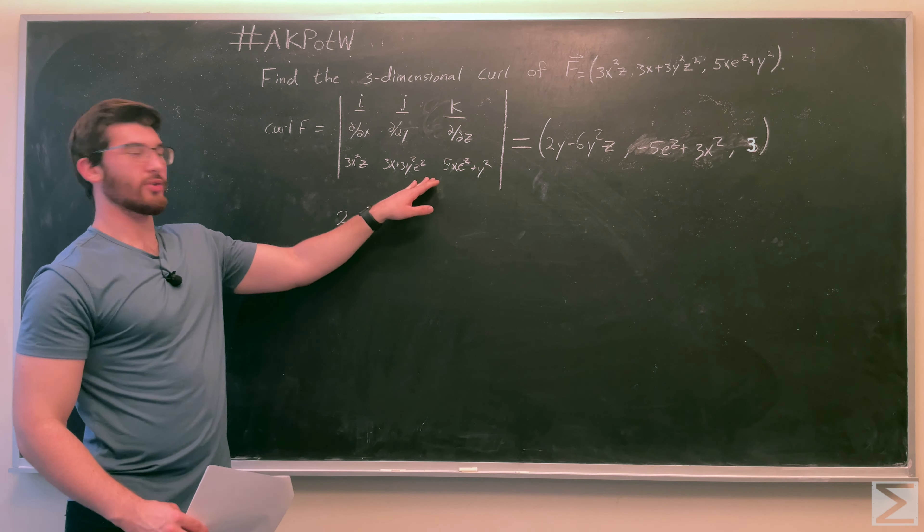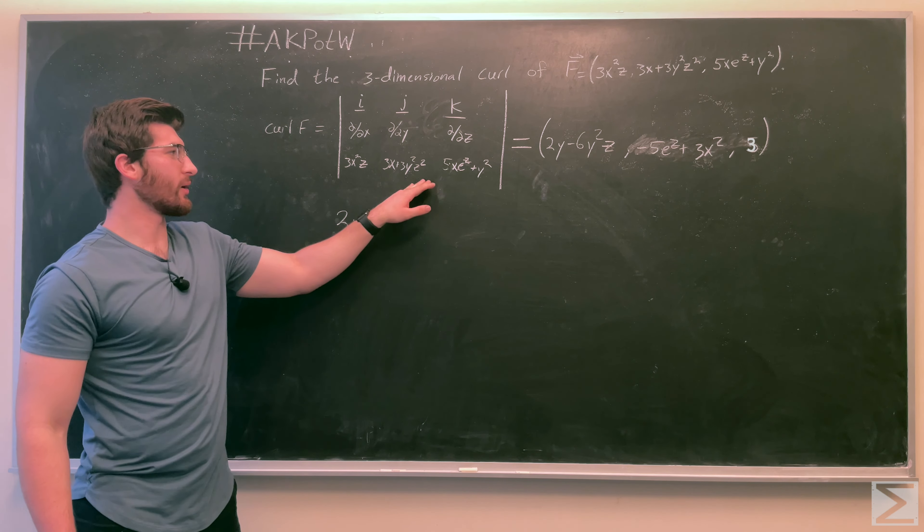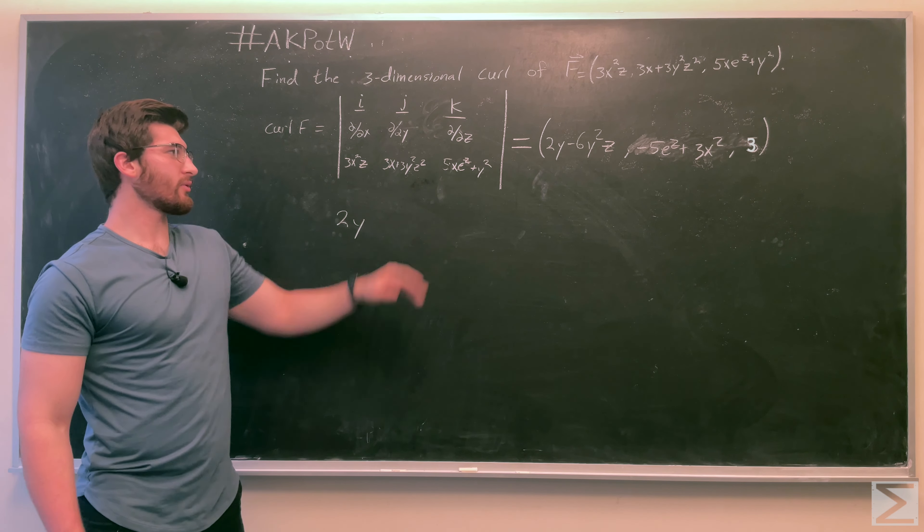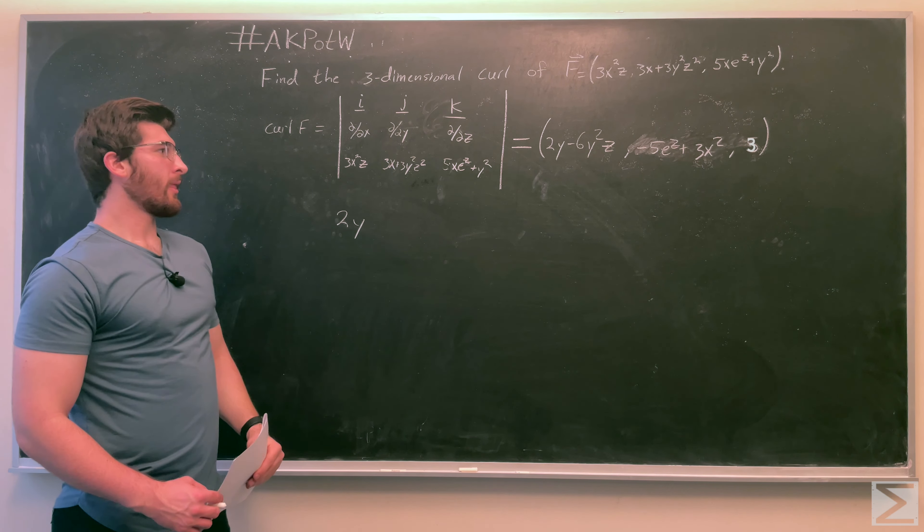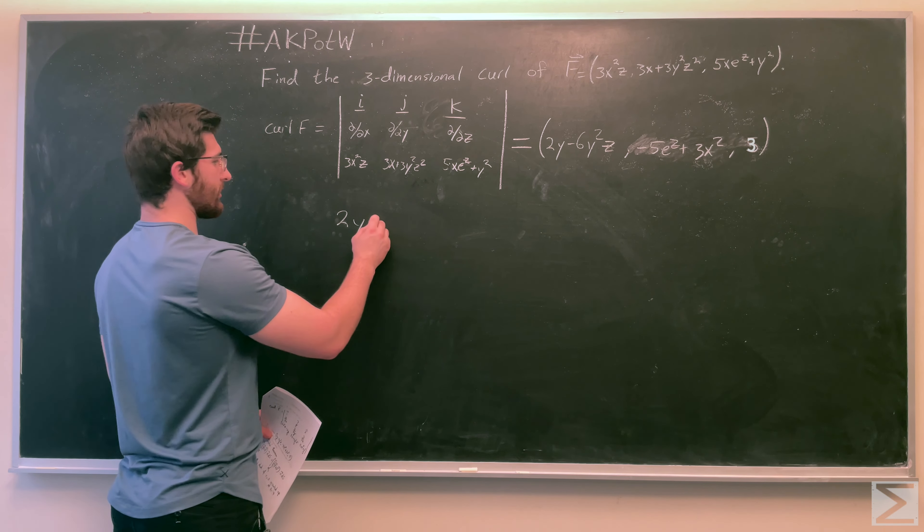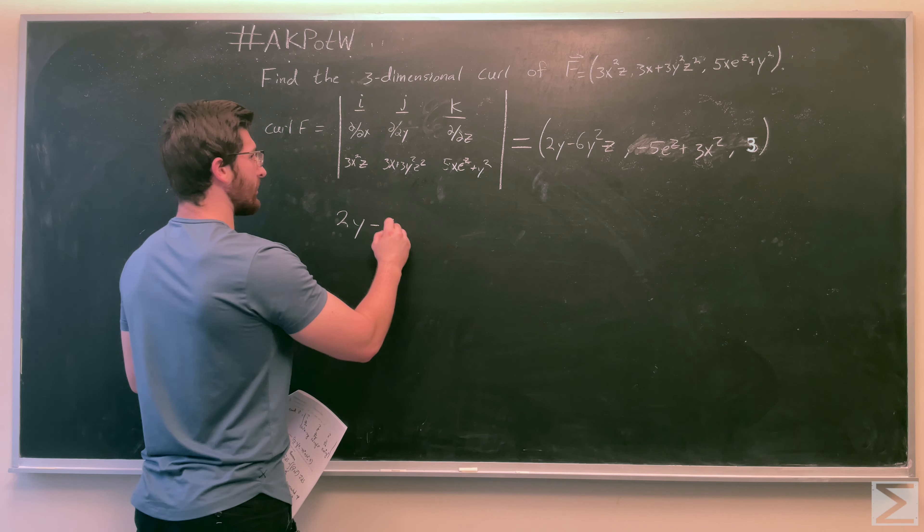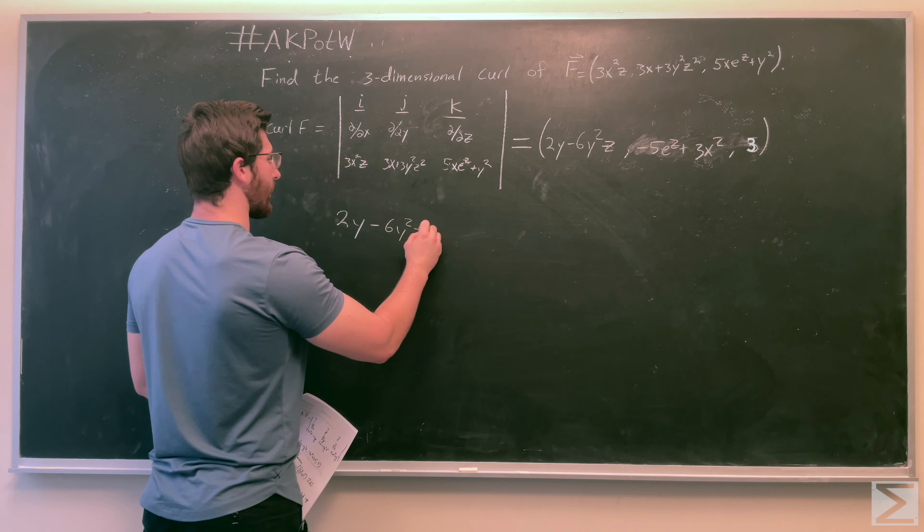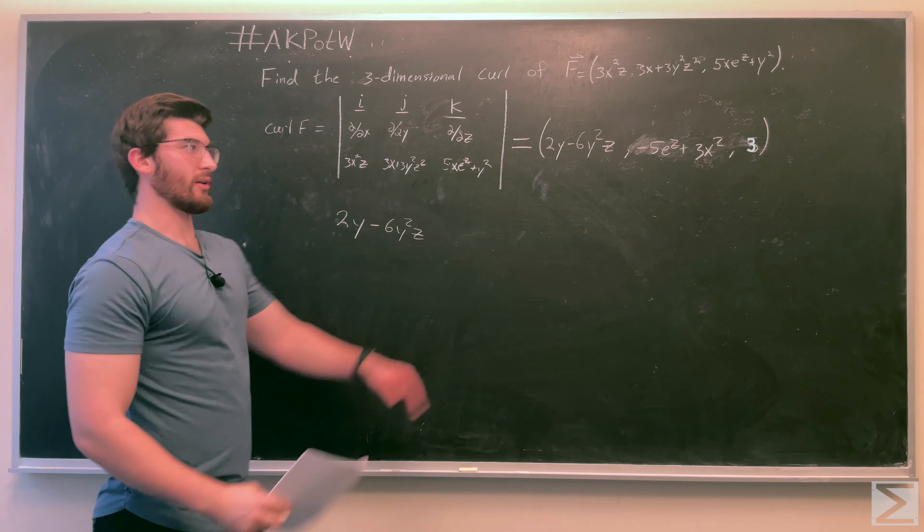And here, you're going to take the partial derivative of 3X plus 3Y squared times Z squared with respect to Z. So that's going to give you 6Y squared Z. So we get 2Y minus 6Y squared Z. And that's how we get our X component.